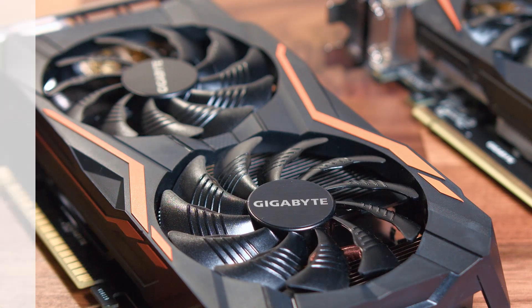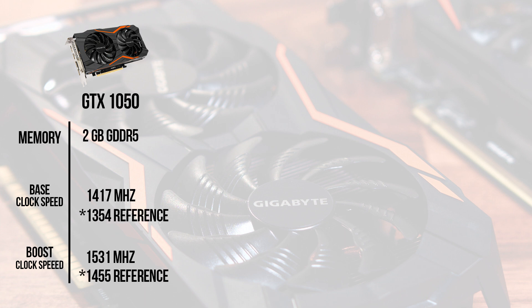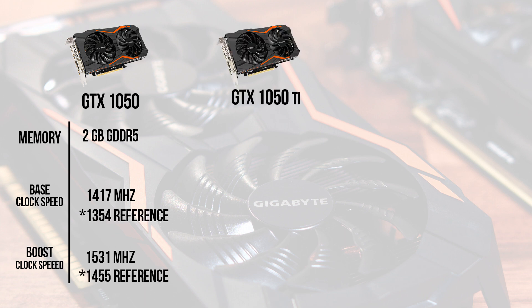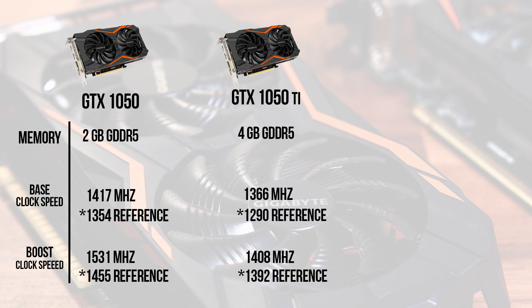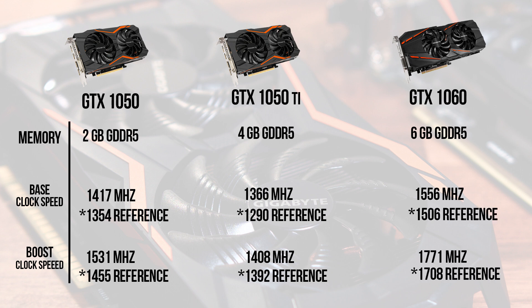The Gigabyte 1050 G1 has two gigabytes of VRAM, has a base core clock speed of 1417 megahertz, and a boost clock speed of 1531 megahertz. The 1050 Ti has four gigabytes of RAM, a core clock speed of 1366 megahertz, and a core boost clock speed of 1480 megahertz. And the 1060 has six gigabytes of RAM, with a base core clock speed of 1556 megahertz, and a boost clock speed of 1771.